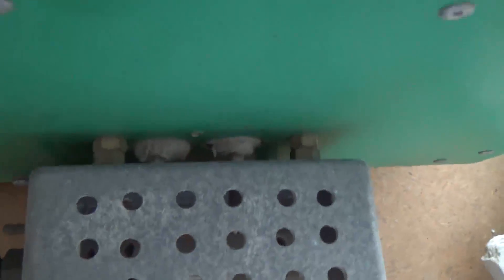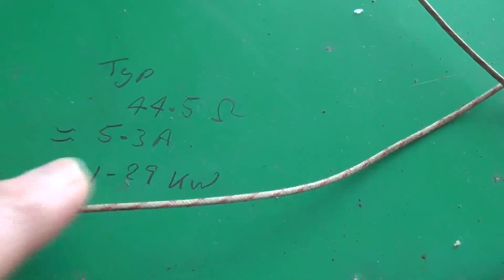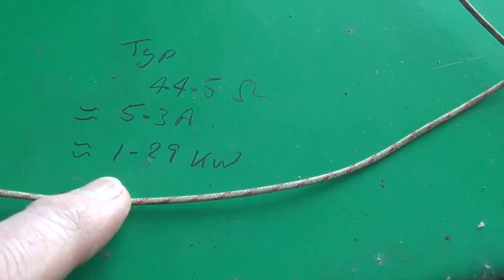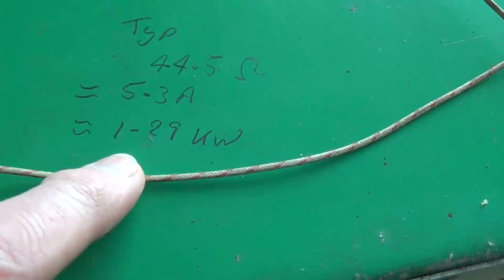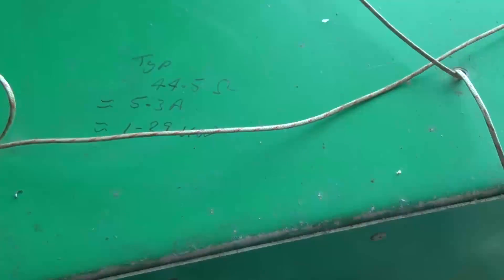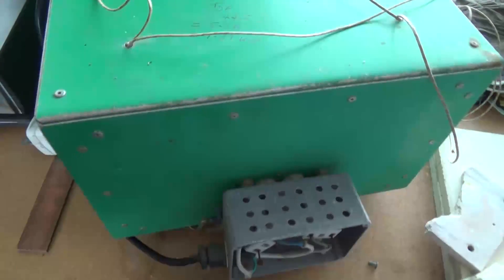The reason I did that was so I could change the elements quickly because these elements, if I get them too hot, they burn out. I've got a note there, so it's typically 44.5 ohms, 5.3 amps, so it's about 1.29, 1.3 kilowatts there.